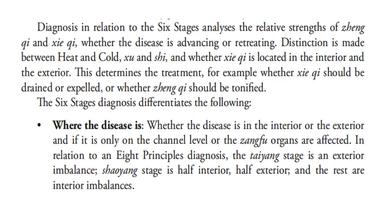Diagnosis in relation to the six stages analyzes the relative strength of zheng qi and pathogenic chi, whether the disease is advancing or retreating. Distinction is made between heat and cold, deficiency and excess, and whether pathogenic chi is located in the interior or exterior. This determines the treatment — for example, whether pathogenic chi should be drained or expelled, or whether zang qi should be tonified.